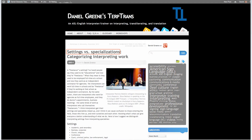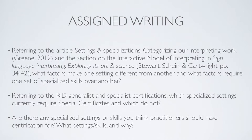Then I'd like you to look at an article I wrote called Settings vs. Specializations: Categorizing Interpreting Work. A writing regarding all of these different things refers to that article and the section you've already read about the Interactive Model of Interpreting in your book, Sign Language Interpreting: Exploring Its Art and Science — what factors make one setting different from another, and what factors require one set of specialized skills over another? Also, referring to the RID generalist and specialist certifications, which specialized settings currently require special certificates and which do not? Finally, are there any specialized settings or skills you think practitioners should have certification for? What settings and skills, and why? For example, you might want to look at medical interpreting.